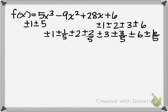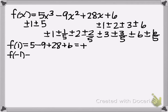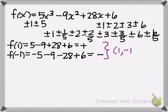We start testing these, going left to right. f(1) gives 5 minus 9 plus 28 plus 26, which is clearly a non-zero positive value. f(-1) is clearly a non-zero negative value. Reflecting back to our use of the Intermediate Value Theorem: going from positive to negative, there has to be a zero on the interval between 1 and -1.